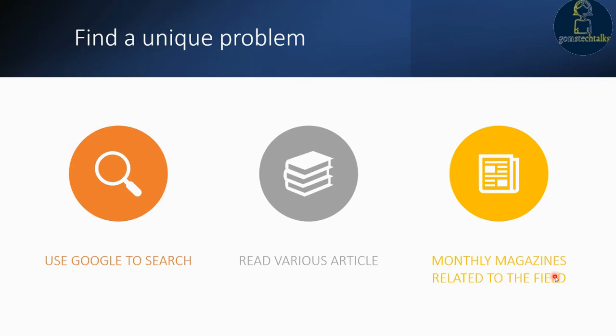I started my search in February 2014 and found this disease in June 2014 — nearly four months. It will definitely take time because you have to search, read, and relate everything to your cross domain. It will take at least two to three months.